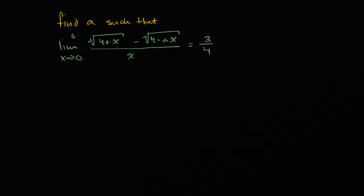We have an interesting problem here. Find a such that the limit as x approaches zero of the square root of four plus x minus the square root of four minus a times x, all of that over x, is equal to three fourths. I encourage you to pause the video and give it a go.